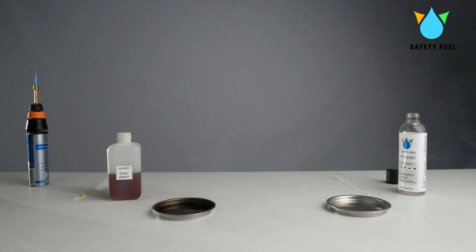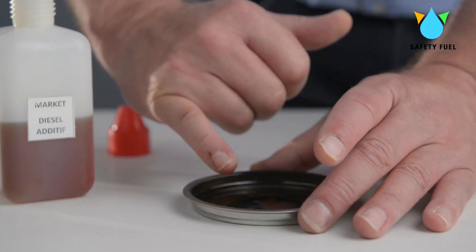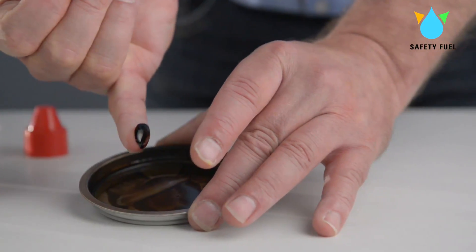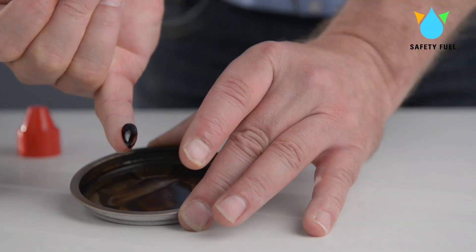After complete combustion we notice a remarkable difference. The traditional market product shows residues which we can find back again in the engine and on parts such as injectors, the DPF particle filter, the EGR valve, the turbo and the exhaust system.